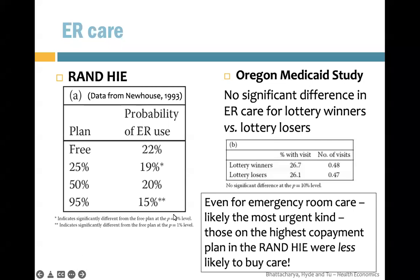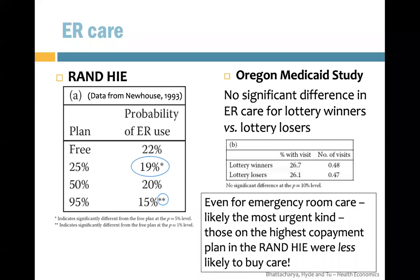For ER care, there are significant results (stars) in the RAND study — there is less chance of ER use if you have to pay more. For the Oregon study, it's not significant: lottery winners and losers do not have statistically significant differences in their percentage of ER visits or number of visits. Overall, ER care shows somewhat downward-sloping but not highly elastic demand.